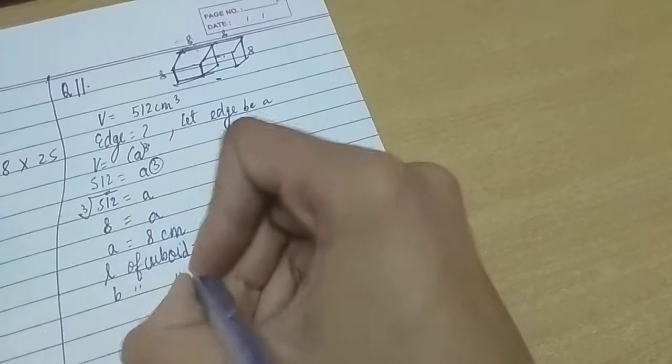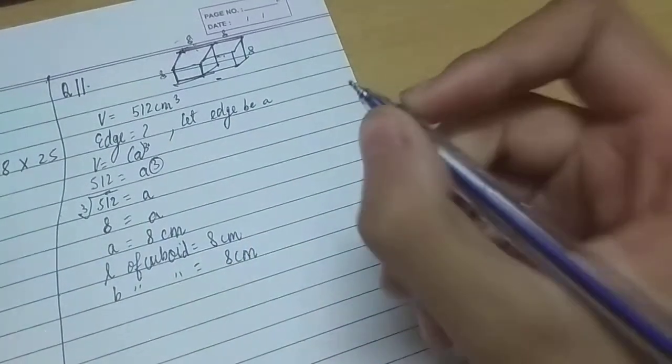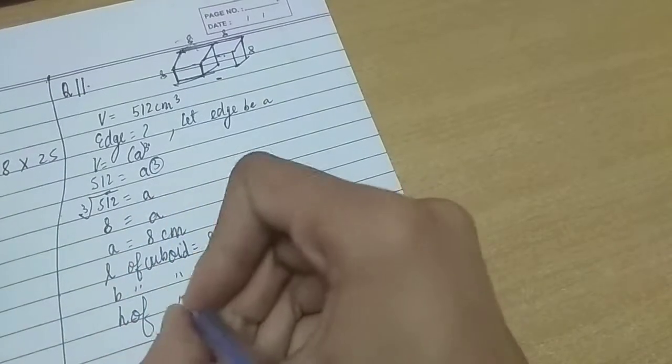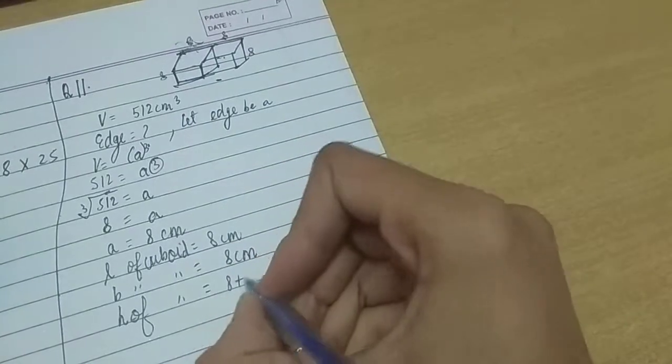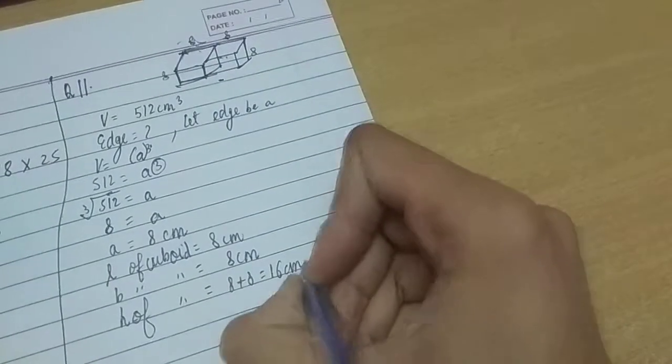Breadth also, no difference. It would be 8 cm. But the difference would be in height. So height of cuboid would be 8 plus 8. 8 plus 8 is equal to 16 cm.